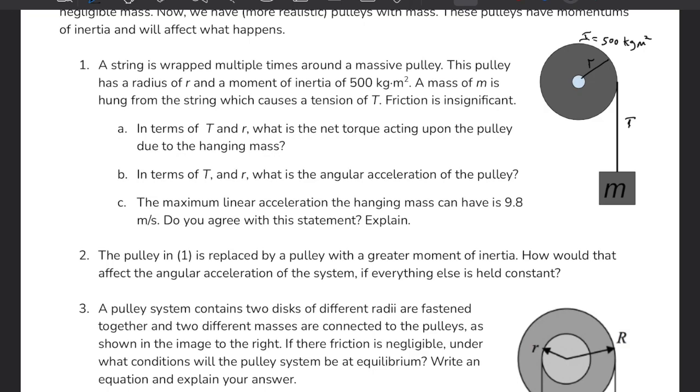Well, we know the mass is pulling down with mg, and tension is pulling the mass up. Tension is also pulling the pulley down. If they want it in terms of T and r, well tension is the force, r is the radius. Net torque is equal to force times radius, so I would say the force is T, and then the r is radius Tr.